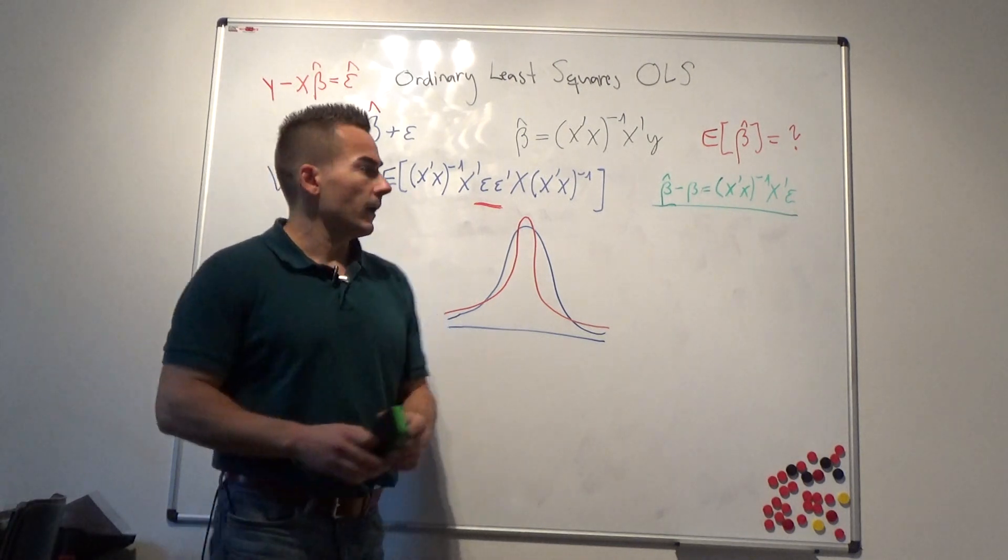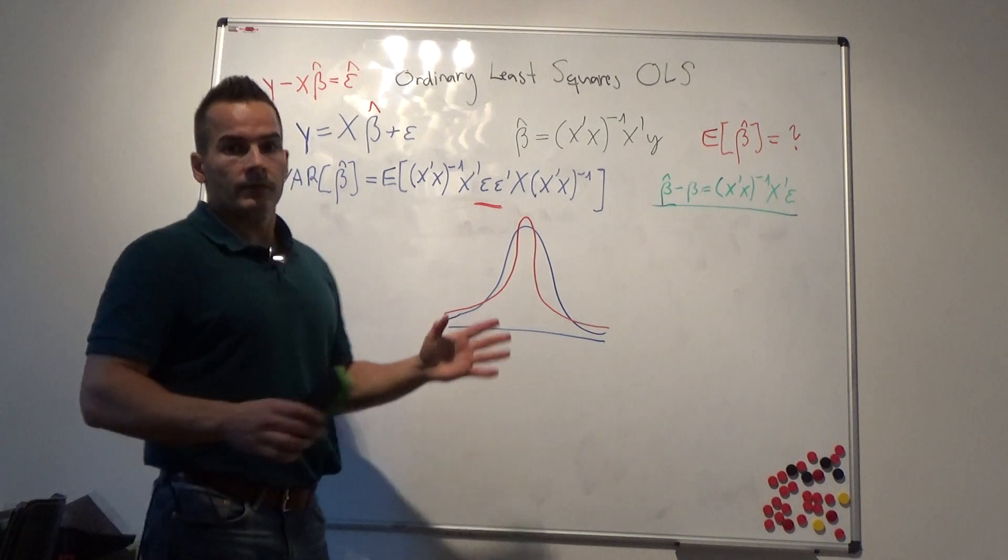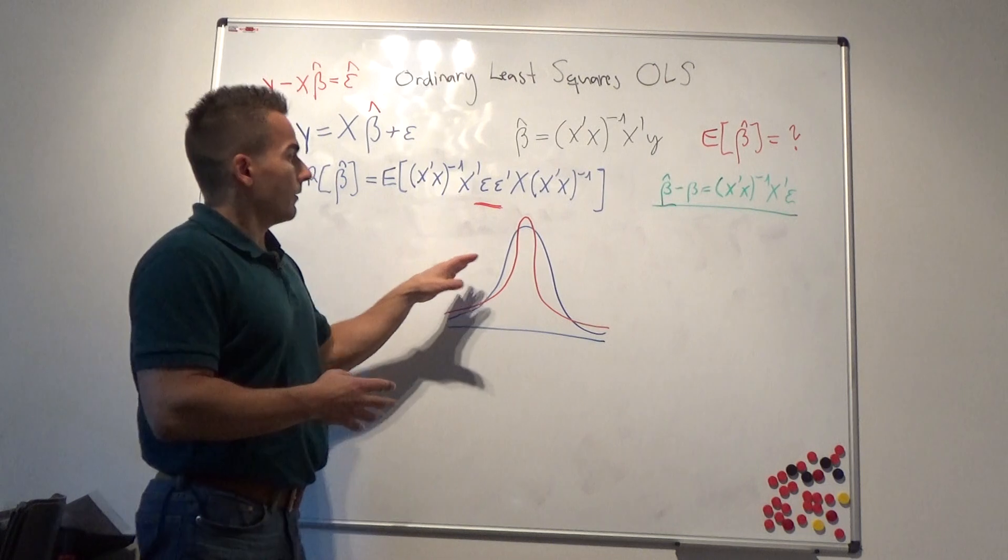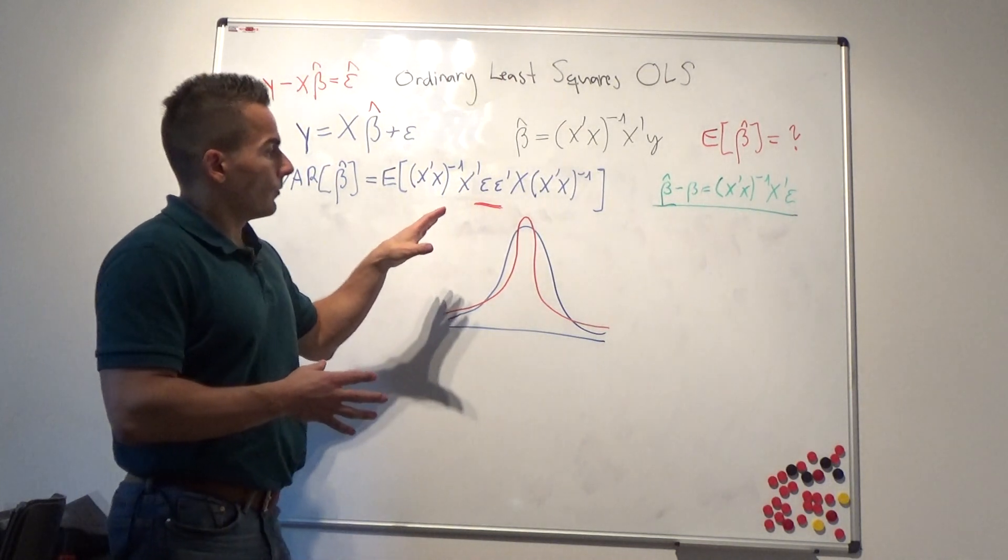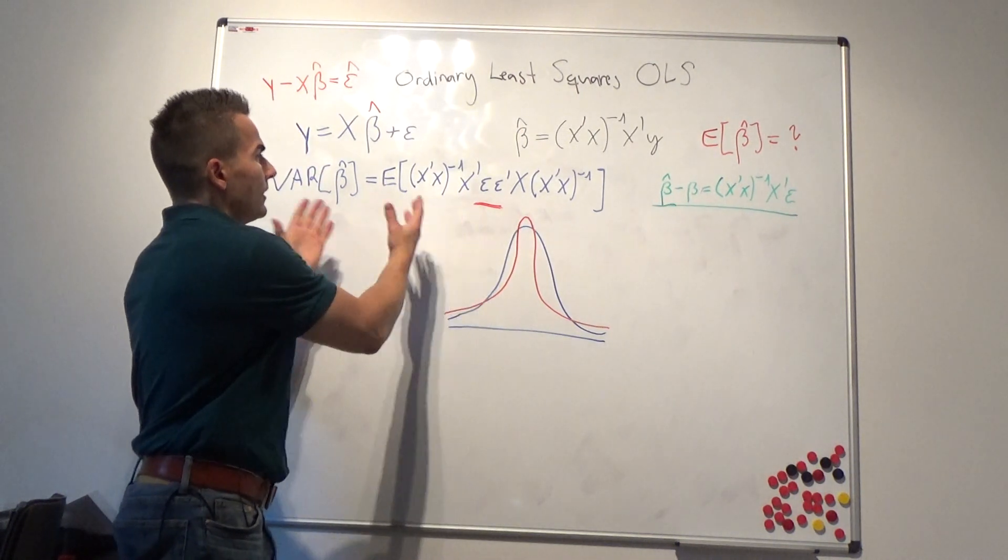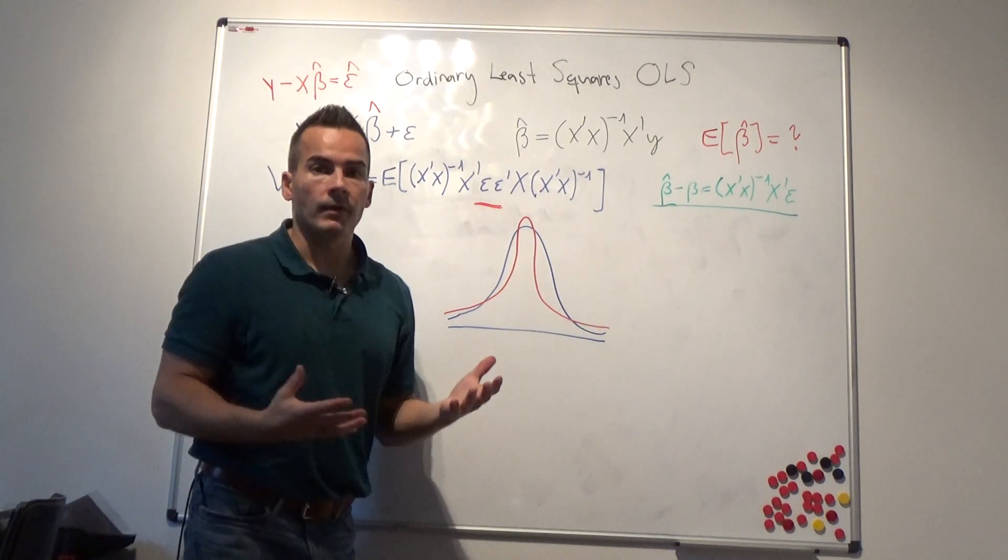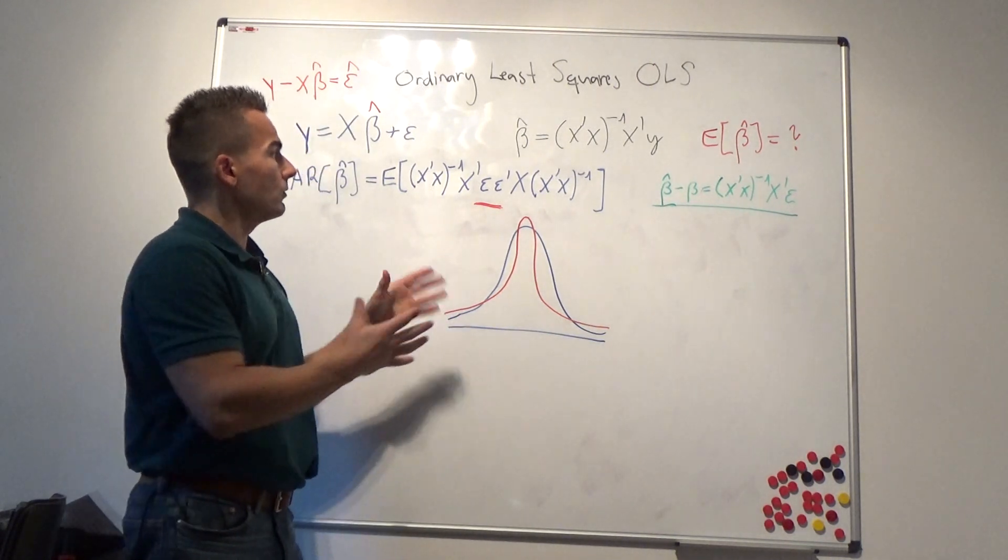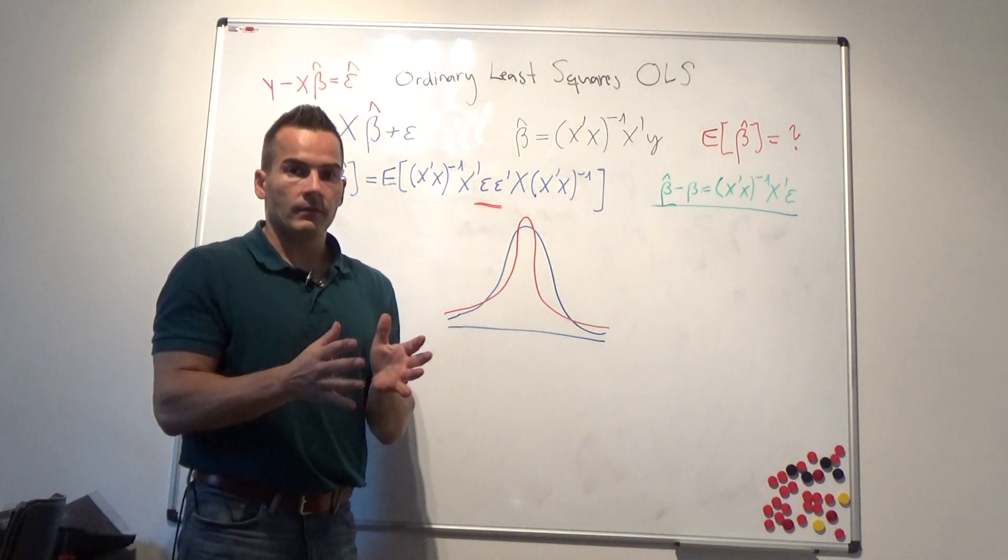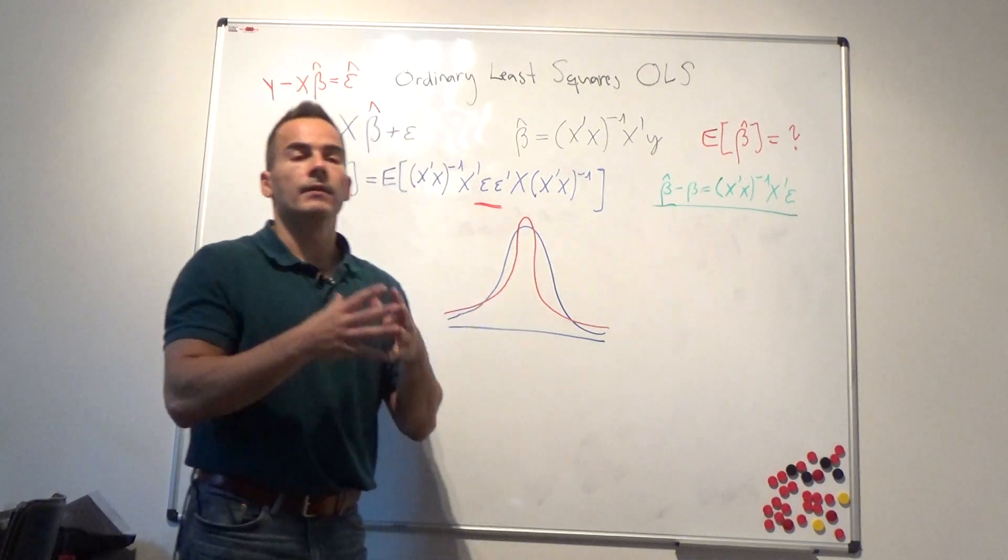But what does that mean? It means obviously if the variance doesn't exist, there is no t-statistic. If the residual variance is not defined, there is no t-statistic that is of any use. You can only use this formula in a world where at least the variance exists. And actually, Nassim Taleb in his new book defines or he argues that the residual process should have a kurtosis of less than 4.2.